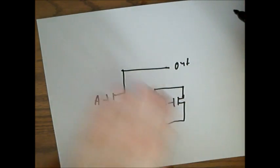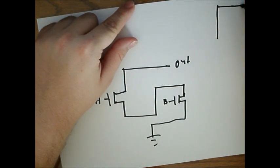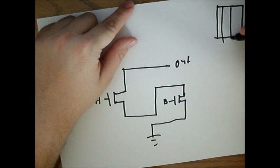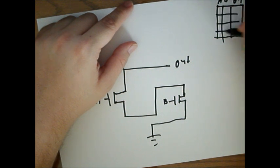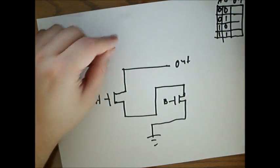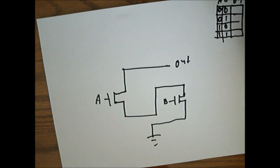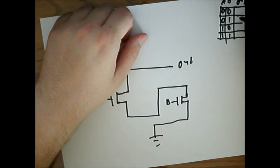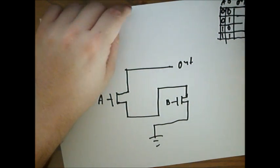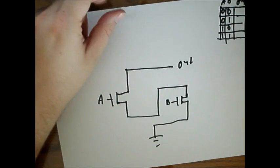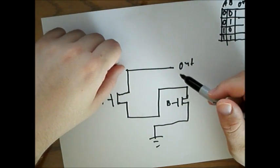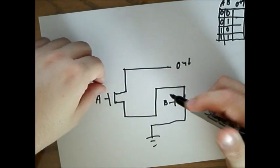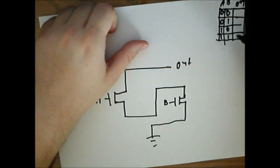So essentially, the output will always be one, unless A and B are both one. And upon quick analysis, we can test this by seeing that since this is daisy-chained, the only way this will be connected to ground is when A and B are both one. So that is definitely logical.